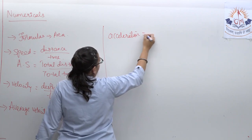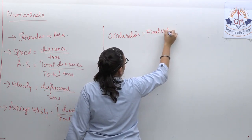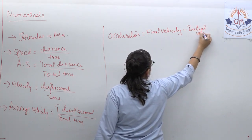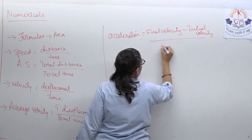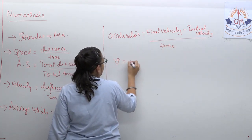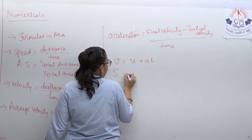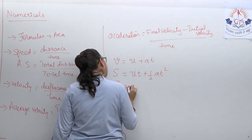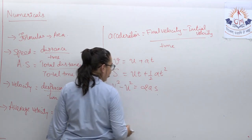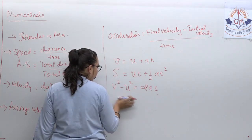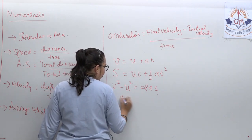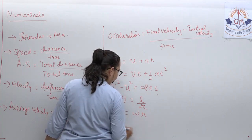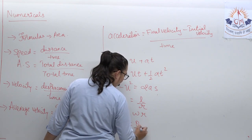Acceleration: final velocity minus initial velocity upon time. The equations of motion are: v equals u plus at; s equals ut plus half a t squared; and v squared minus u squared equals 2as. For circular motion: theta equals l by r; v equals omega r; omega equals theta upon t.